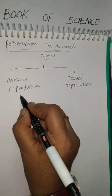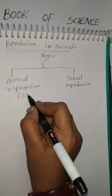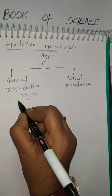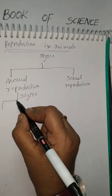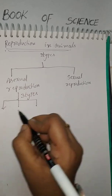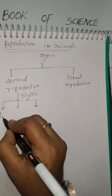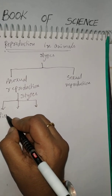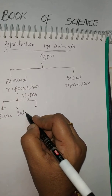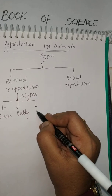Asexual reproduction is further divided into three types: fission, budding, and regeneration.